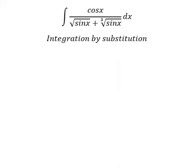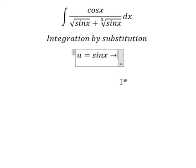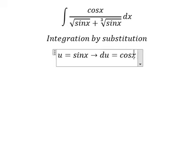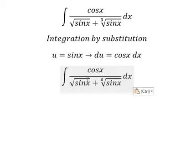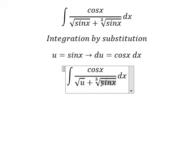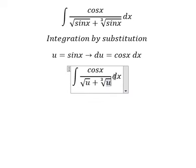I will put u equals to sin x. Then we do the first derivative for both sides, and we have du equal to cos x dx. So sin x we change by u, and cos x dx we change by du.